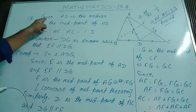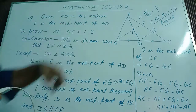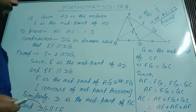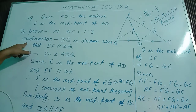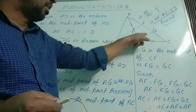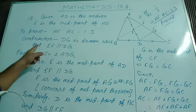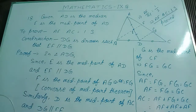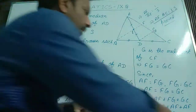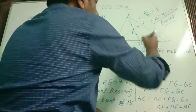Given information: AD is the median, E is the midpoint of AD. To prove: AF is to AC equal to 1 is to 3. Construction is required. In construction, DG is drawn parallel to EF — EF is parallel to DG, these two lines are parallel.